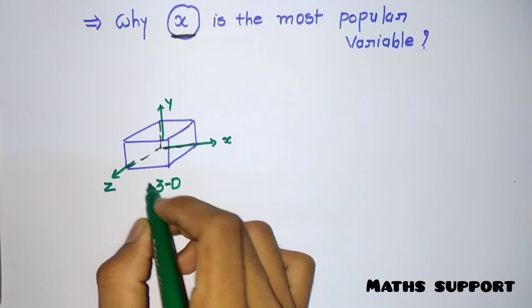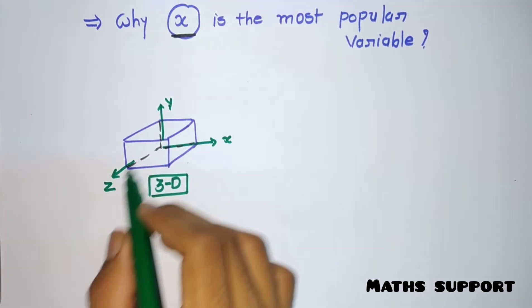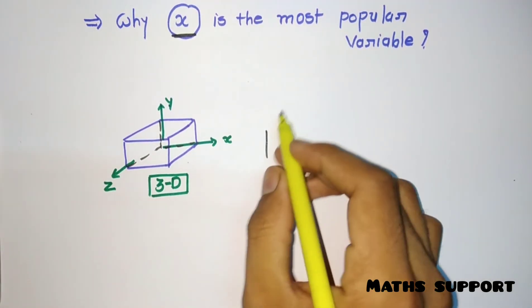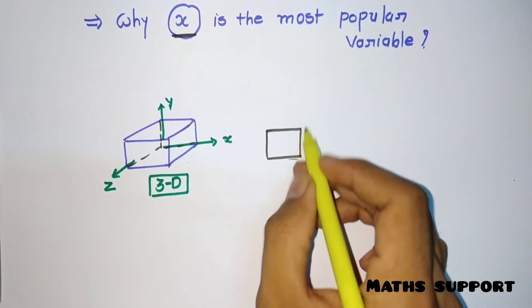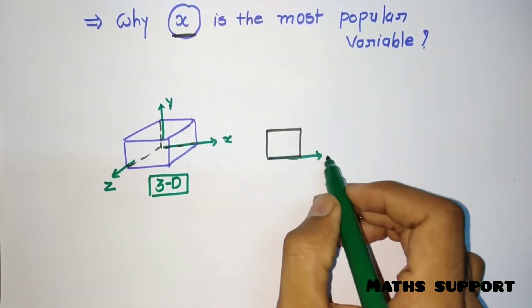Now suppose if I'm discussing a two-dimensional figure - it has only length and height. So for this figure I need two axes: X and Y.